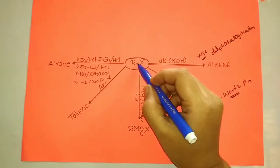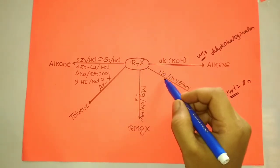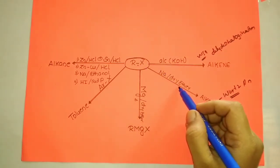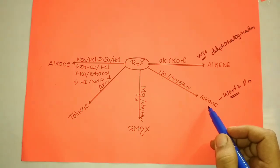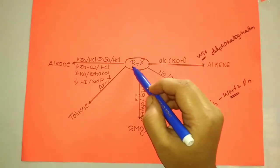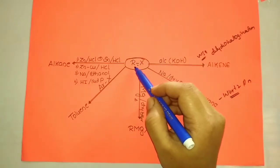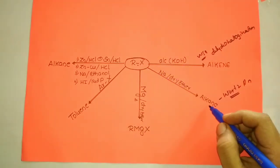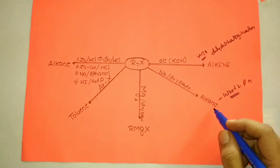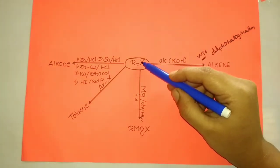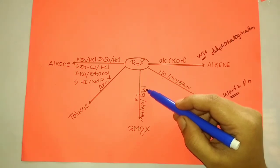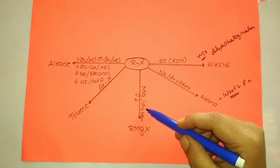When alkyl halide with sodium in presence of dry ether is mentioned in a question, we will get a higher alkane — meaning the product contains double or more carbon atoms than what was present in the reactant.